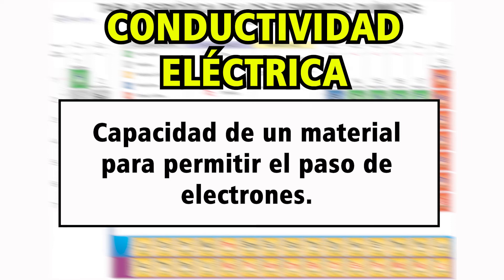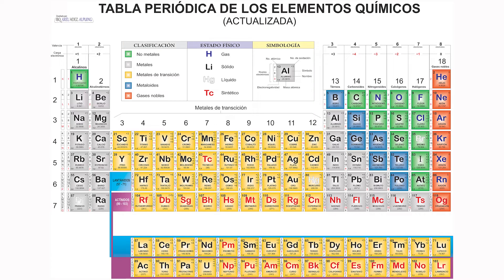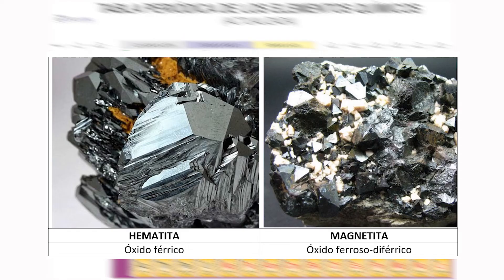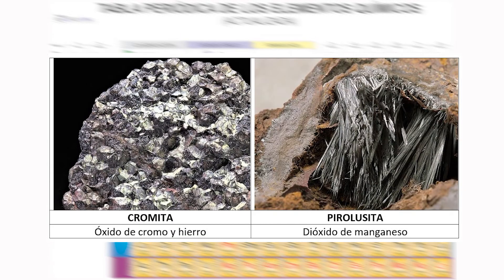Todos los metales poseen esta propiedad. Todas estas propiedades varían dependiendo de cada metal. Los metales se pueden encontrar en la naturaleza en forma de óxidos o de sulfuros, es decir, ya combinados con oxígeno o azufre, en minerales como estos. La hematita y la magnetita, que son rocas formadas básicamente por óxido de hierro. Otro ejemplo es la cromita, que en su mayor parte es óxido de hierro y cromo.